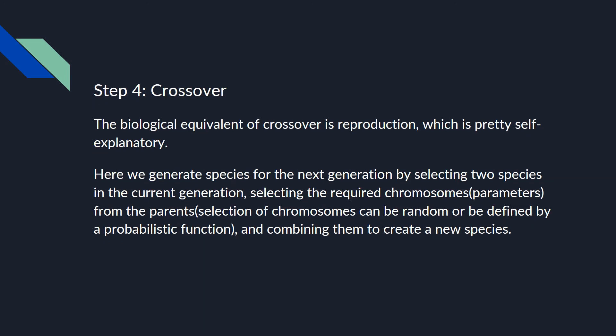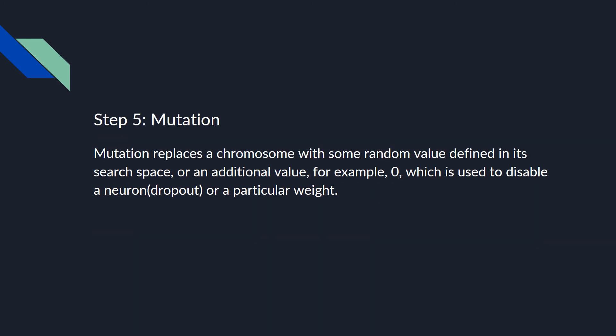Step four is crossover — the biological term is reproduction. We generate species for the next generation by selecting two species from the same generation, randomly selecting chromosomes from the parents observed by a probabilistic function, and combining those parameters to generate a new species. Next is mutation — even for humans or any animal, offspring are not an exact replica. We undergo some mutations, which is necessary for evolution. Mutation replaces a chromosome with some random value defined in the search space, or an additional value like null or zero, which is used to disable a neuron — that's called dropout.